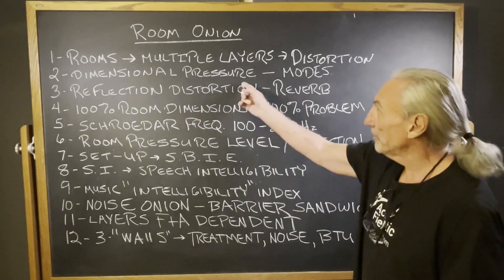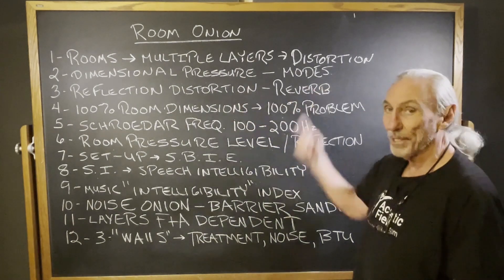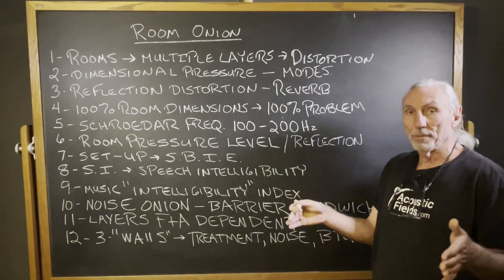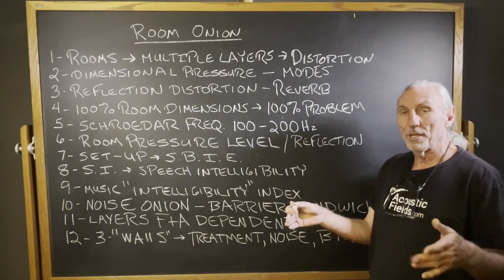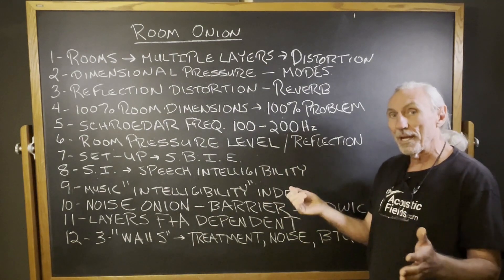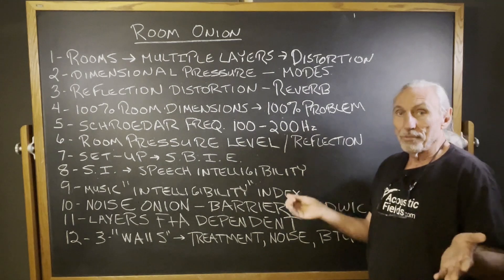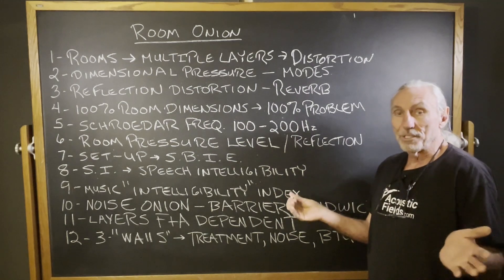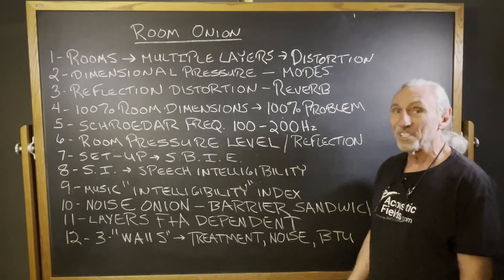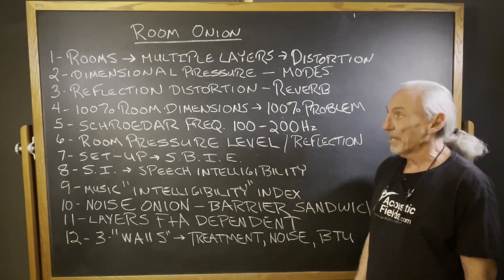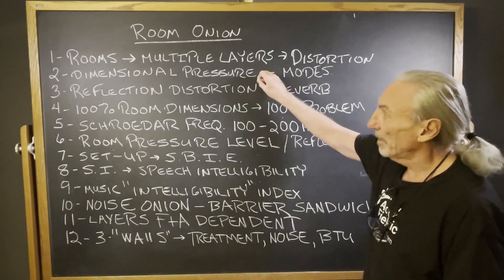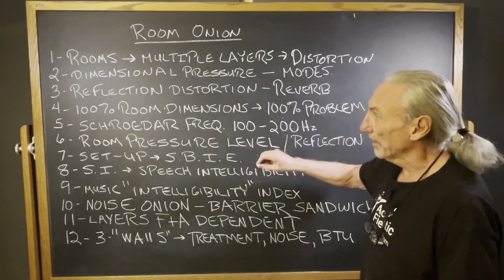What do we have? Dimensional pressure? Well, that's modes. We have certain distances in our room — width, length, and height — and certain energy fits in those distances and certain energy doesn't. That's just all part of physics.